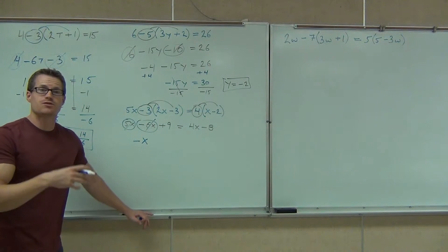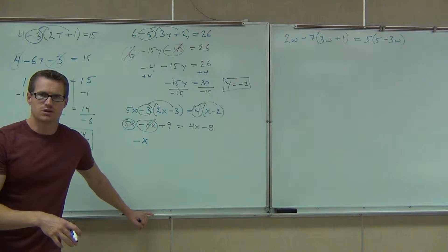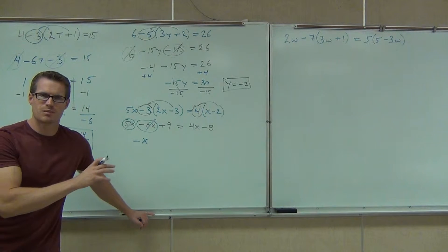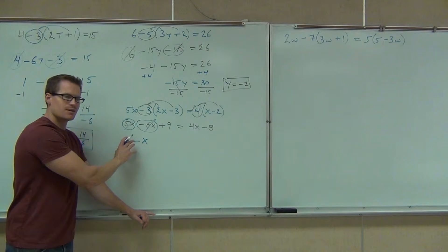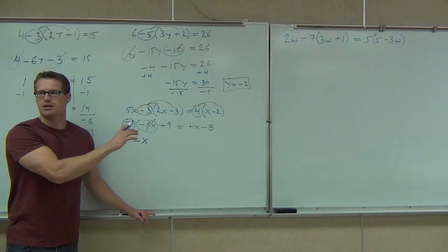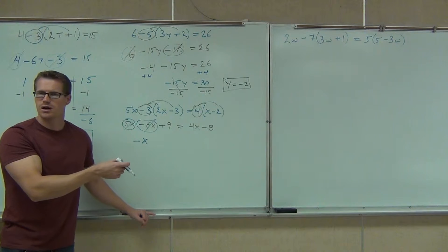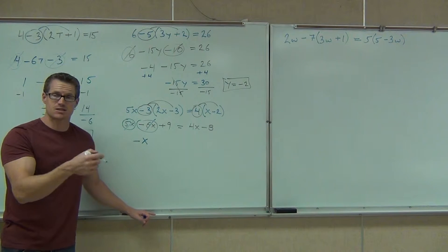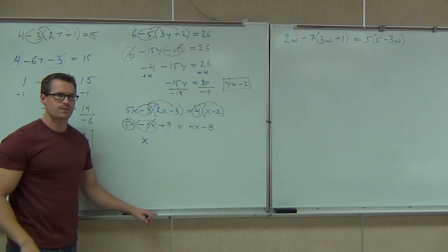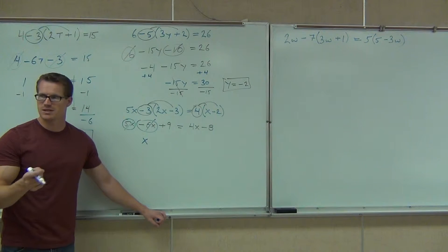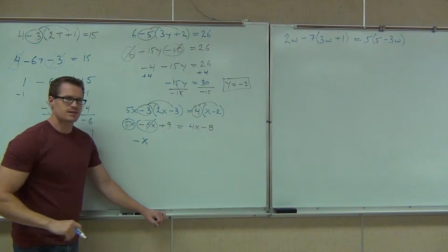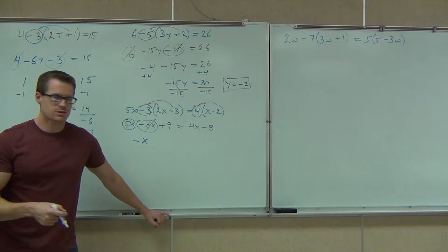Negative x stands for negative 1x. This is kind of a big deal — this is where people make a mistake. They give me sometimes 0, sometimes 11 or negative 11, or just a single x. We need to know that that is negative x or negative 1x.